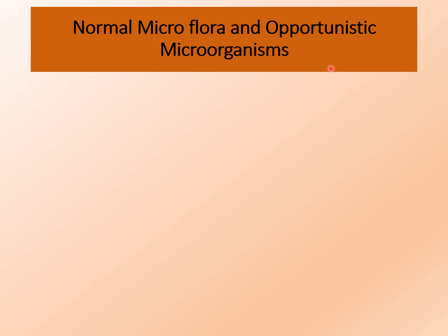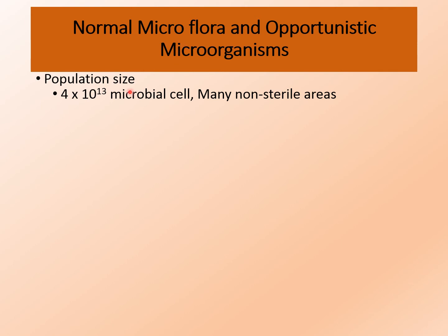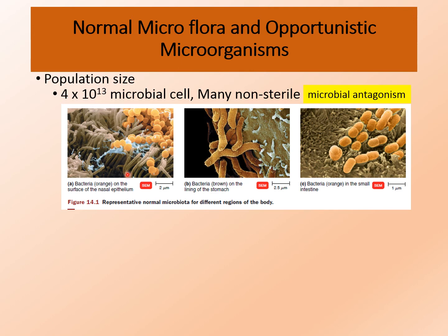Not all microbes are pathogens. Microbes that establish permanent colonies inside or on the body without producing disease make up the normal microflora or microbiota. On average, there are 4×10¹³ microbial cells in a healthy adult, meaning many parts of our body are not sterile. These bacteria or microorganisms are beneficial and do not allow pathogenic microbes to grow or colonize, via a process called microbial antagonism. Many factors determine the distribution and composition of normal flora, including nutrients, physical and chemical factors, host defense, and mechanical factors.